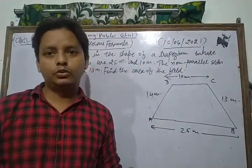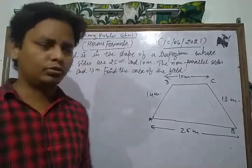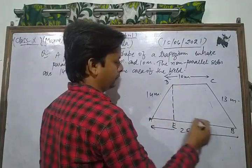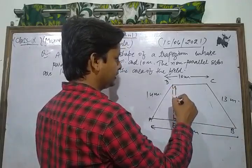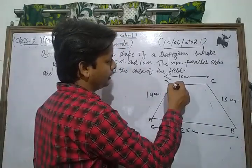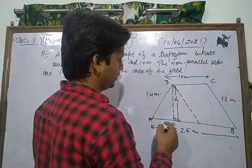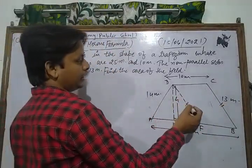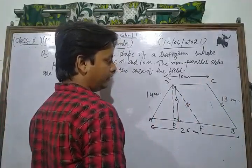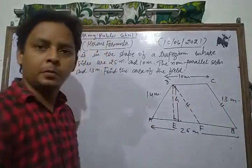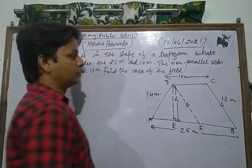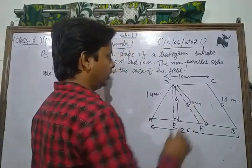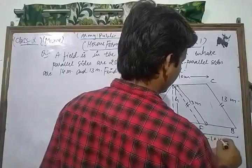We know the area of a trapezium is equal to one-half times the sum of parallel sides into height. To find the height, we draw DE perpendicular to AB. We also draw DF parallel to BC as a construction. Since DF is parallel to BC and CD is parallel to BF, BCDF becomes a parallelogram, and opposite sides are equal, so DF = BC = 13 meters and BF = CD = 10 meters.